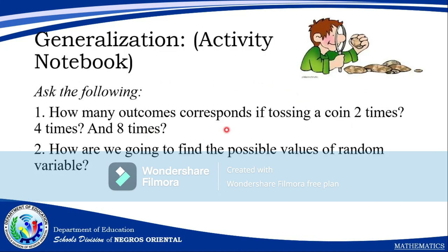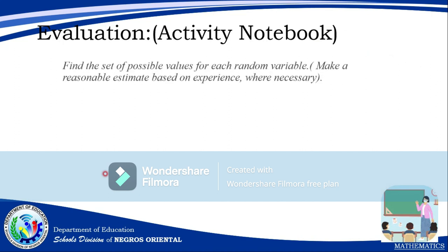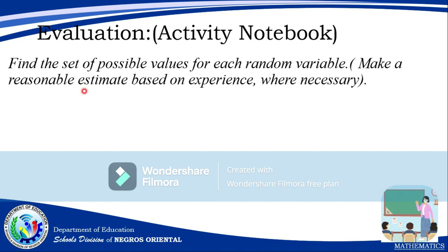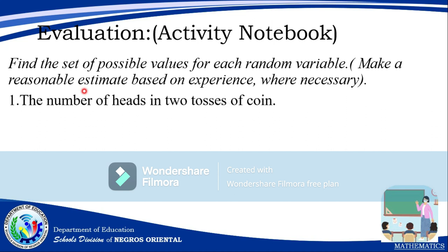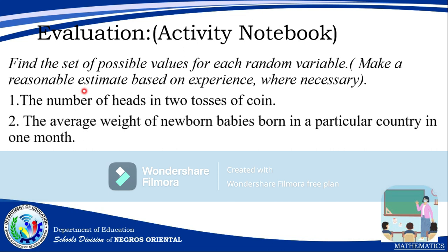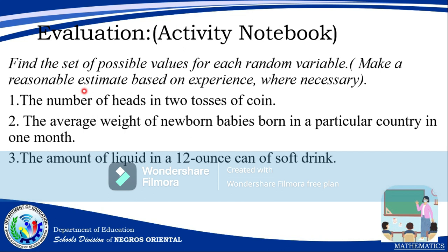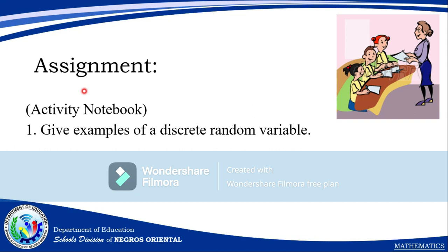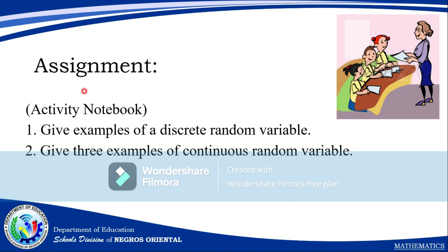Using Pascal's Triangle, how many outcomes correspond to tossing a coin 2 times? 4 times? And 8 times? Then, how do we find the possible values of a random variable based on Pascal's Triangle? Also: find the set of possible values for each random variable — (1) number of heads in two tosses of a coin, (2) average weight of newborn babies in one month, (3) amount of liquid in a 12-ounce can of soft drinks. Give three examples each of discrete and continuous random variables.